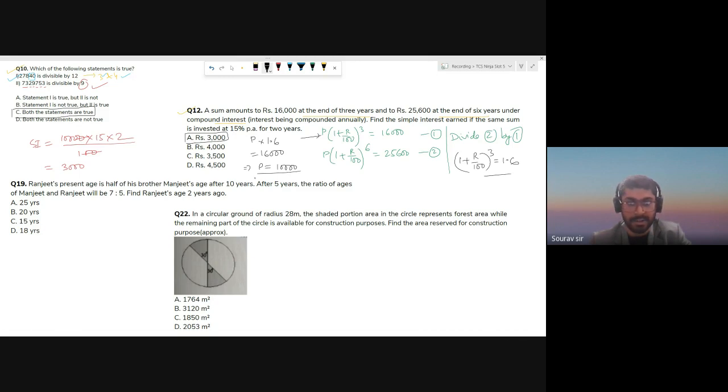Done, next one. Age problem. This was the only pure age problem that I found, others were just relation proportions. Ranjeet's present age is half of his brother Manjeet's age after 10 years. Let Manjeet's present age be x, so after 10 years he will be x plus 10, and Ranjeet now is x plus 10 by 2.